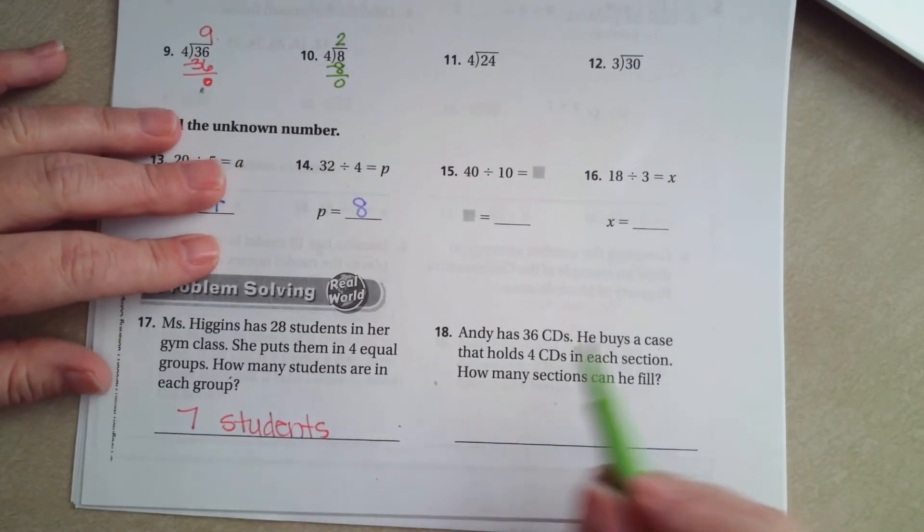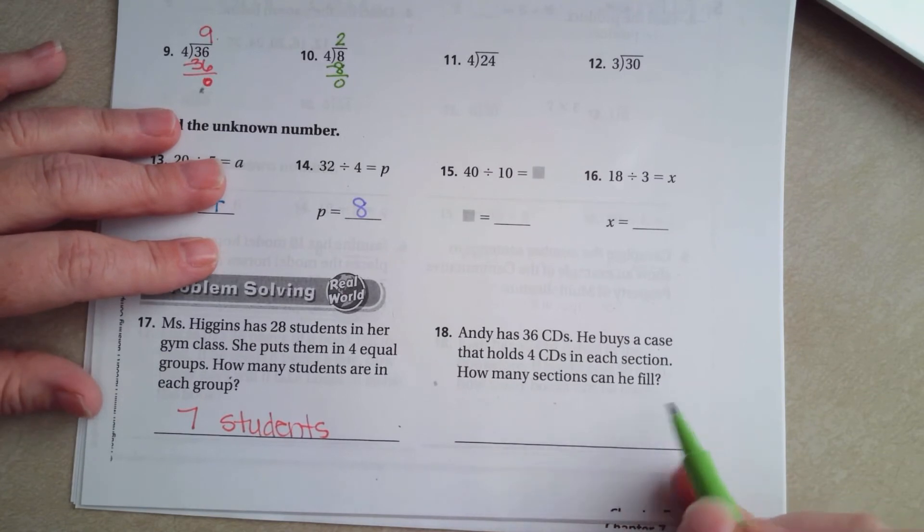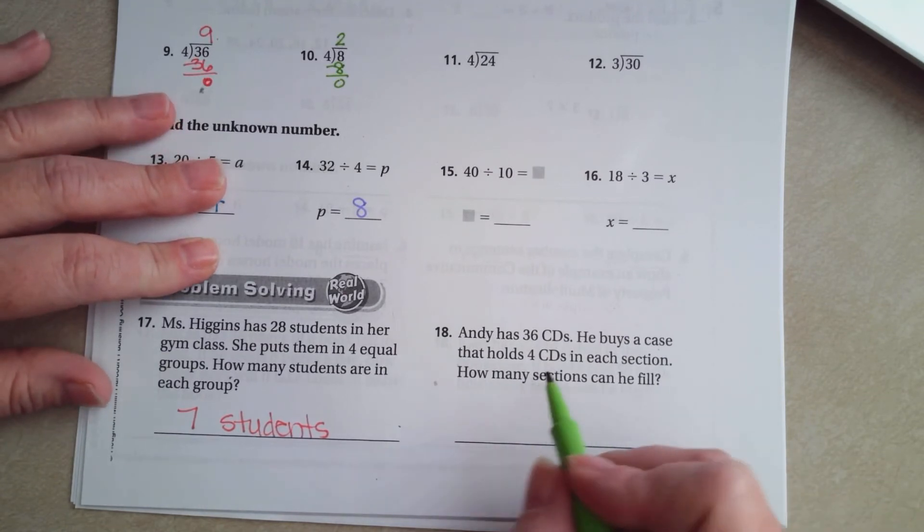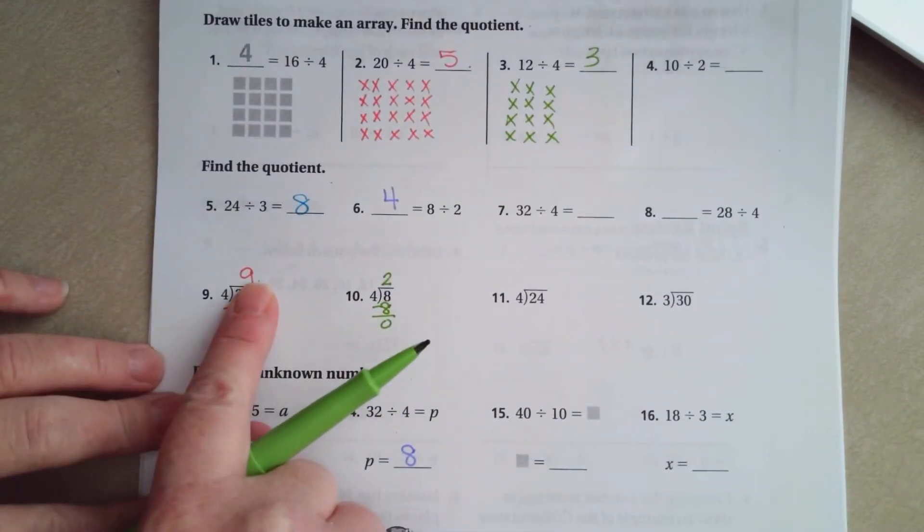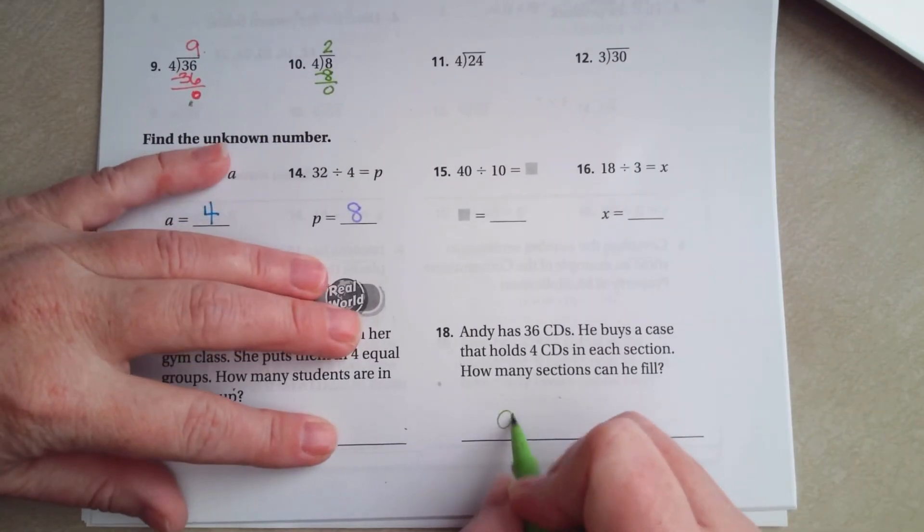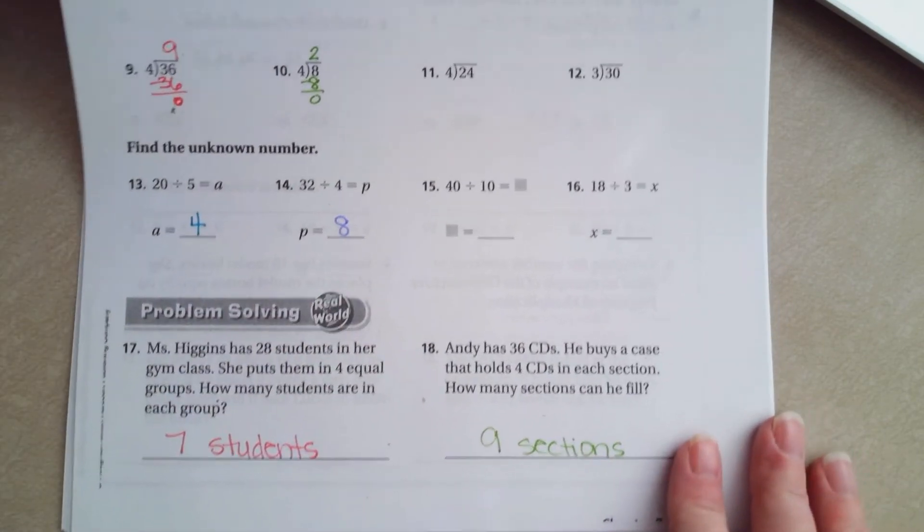Andy has 36 CDs. He buys a case that holds 4 CDs in each section. How many sections can he fill? Well, 4 times what is 36? Just like up here, 4 times 9 is 36, so it's going to be 9 sections.